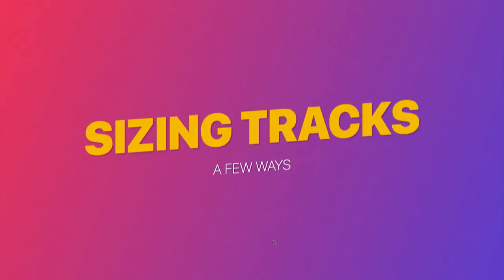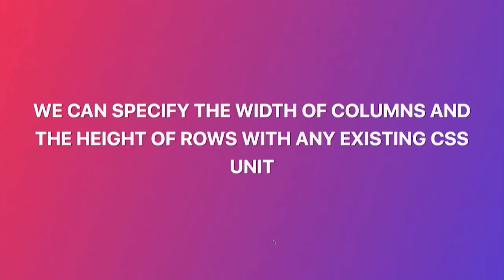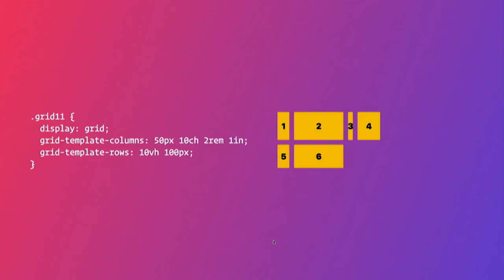Let's talk about sizing tracks — tracks are rows and columns. You can specify their size using any existing CSS unit: pixels, rems, ems. Anyone use 'ch' before? It's basically the width of a zero character, and if you use a monospace font they're all the same. You can also use inches, vh, or anything else. Any existing CSS unit can be used to size your tracks.